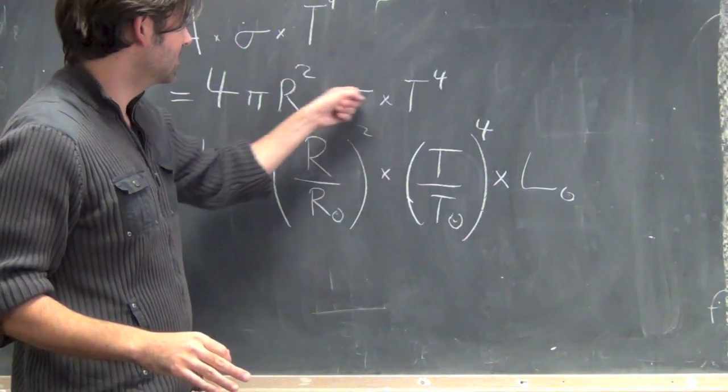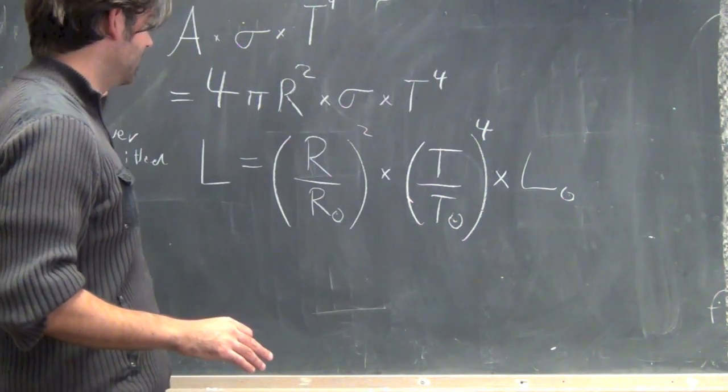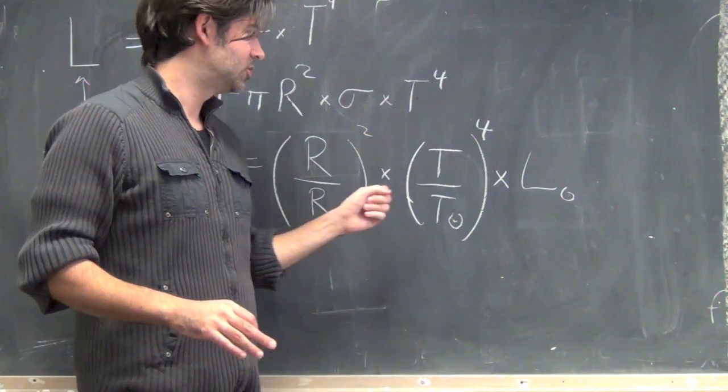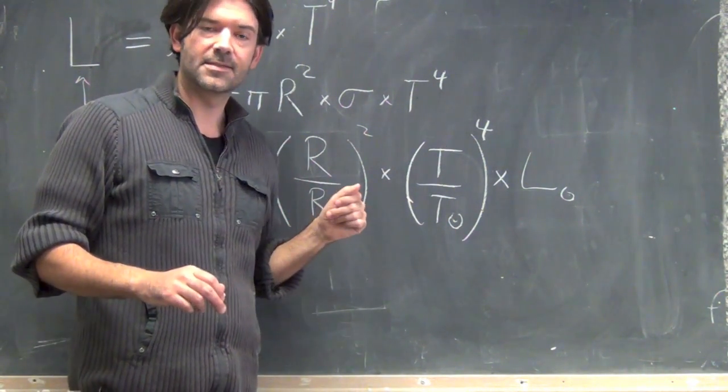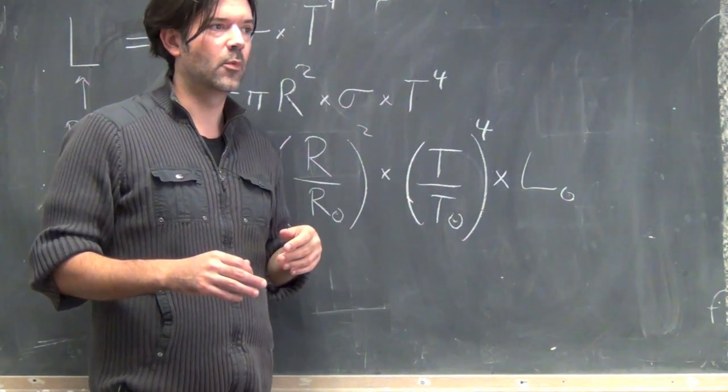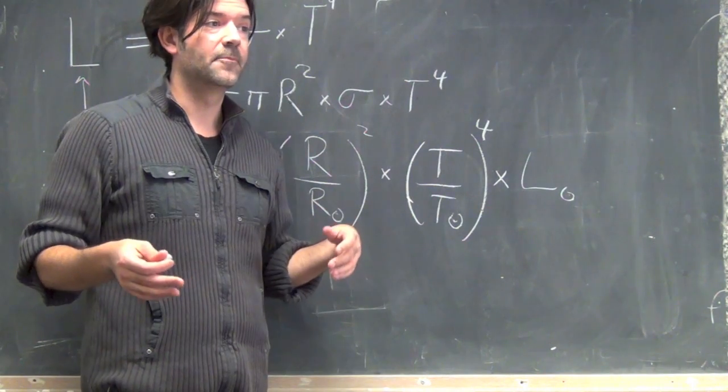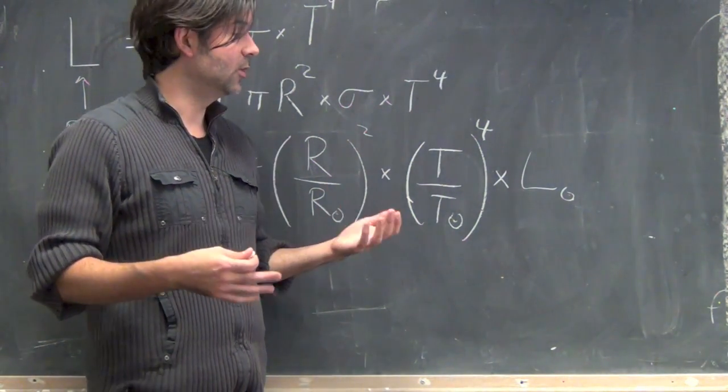And the reason is, is that since I know that this expression here, if I plug in the radius of the sun and the temperature of the sun, I'll get the luminosity of the sun, I can rescale everything to units where it's relative to the sun size. In a similar way to how when we used Kepler's law,